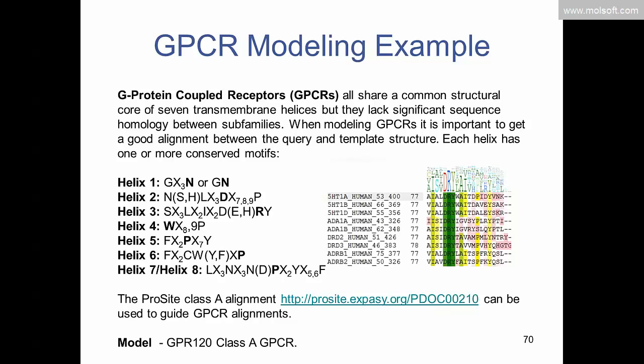For GPCRs, sequence identity is very low overall, but they all share a common structural core of seven transmembrane helices, so there is good structural identity despite poor sequence identity. Another useful aspect is that for each helix, certain motifs are generally conserved within family A GPCRs — for example, the DRY motif in helix 3 is usually fully conserved. These conserved motifs can be used to guide the alignment to the template, enabling reasonable models to be built even with poor sequence identity.